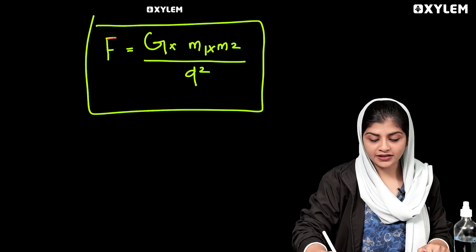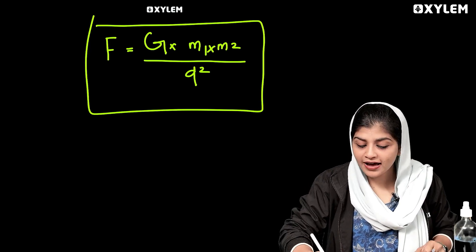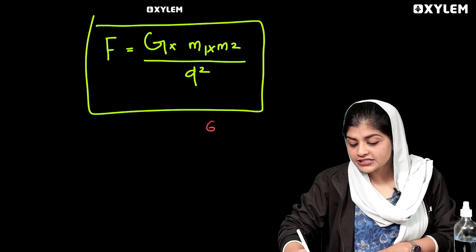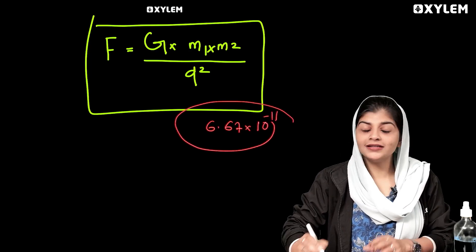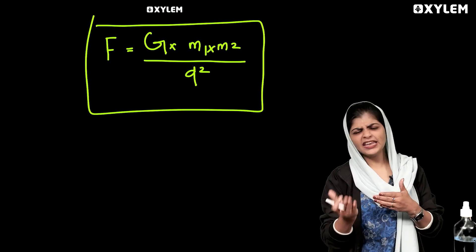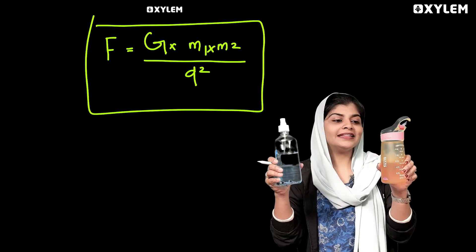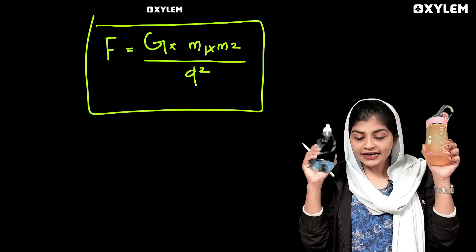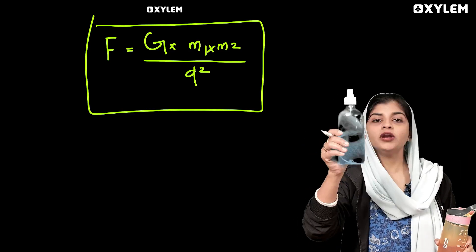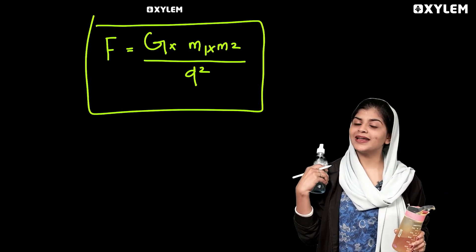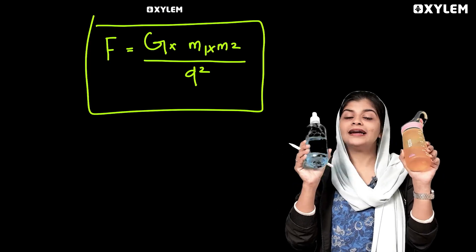F is equal to G. G is the value of the gravitational constant. It's 6.67 into 10 raised to minus 11. Let's learn how F is equal to G. This is attractive force. M1 is the mass of the first object. M2 is the mass of the second object.